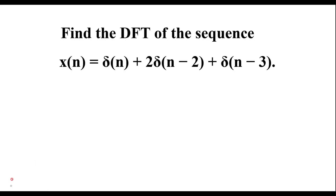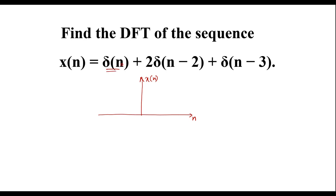Here the sequence x(n) is given in terms of impulse signals. Let me draw the signal x(n). We know that δ(n) means at n = 0, the amplitude of the signal is 1. So at n = 0, the value is 1.